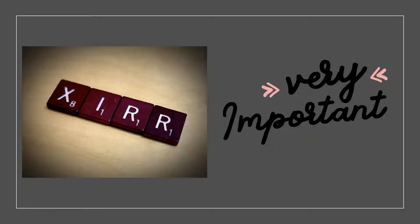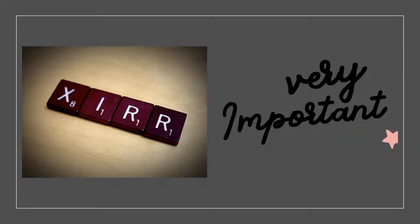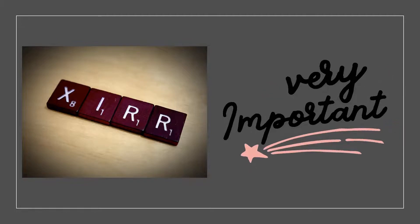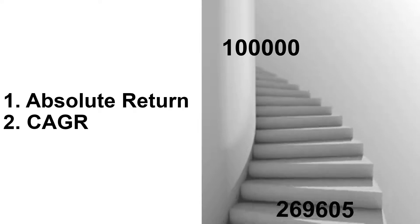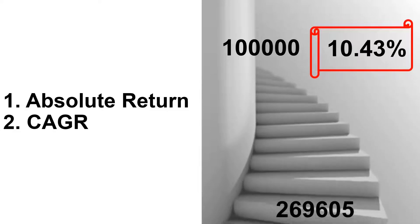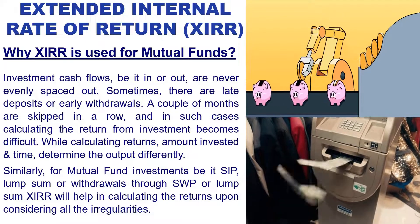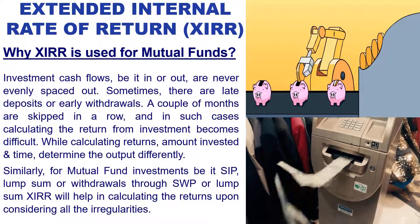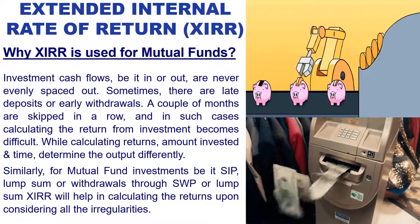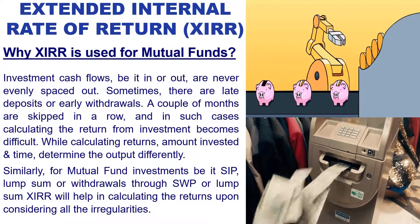Now, before we move on to the third and last type of return, which is XIRR or Extended Internal Rate of Return, it is critical to understand why XIRR is so important. In the previous two types of returns — absolute return and CAGR — we were assuming one original investment of Rs. 1 lakh and how it has grown over the years. However, this is not a real-life scenario, because investment cash flows, be it in or out, are never evenly spaced out. Sometimes there are late deposits or early withdrawals, a couple of months are skipped in a row, and in such cases, calculating the return from investment becomes difficult.